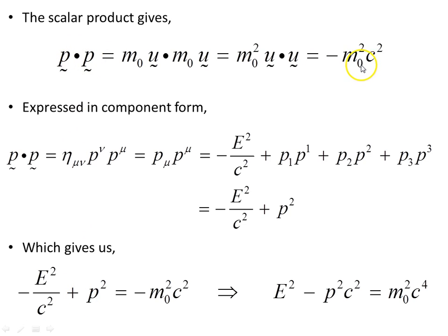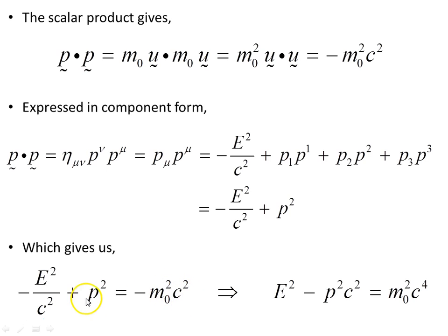Since p·p equals minus m₀²c², this object we found in component form is equal to minus m₀²c². Multiplying through by c² and by minus 1, we create this important energy-momentum invariant that we will see more of later.